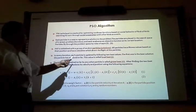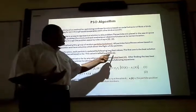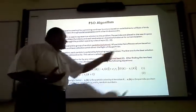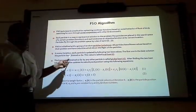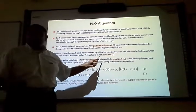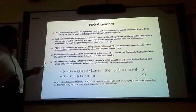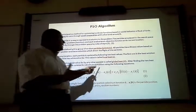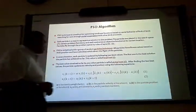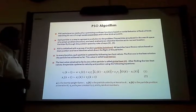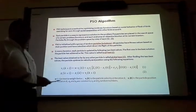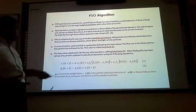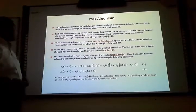In every iteration, each particle is updated by two following best values. The first one is the best solution the particle has achieved so far, this is called local best solution, and another best solution called the global best solution, which is the solution obtained so far by any other particle in the swarm. After finding the two best values, the particle updates their velocity and position according to these equations.